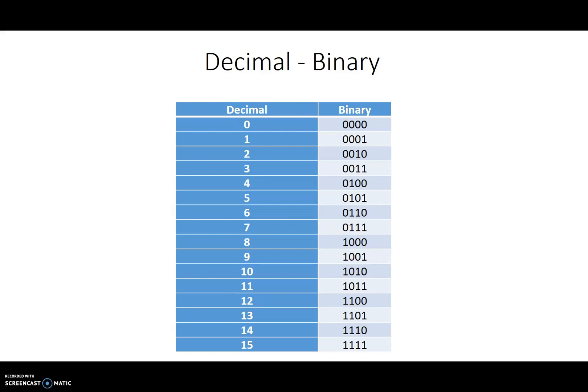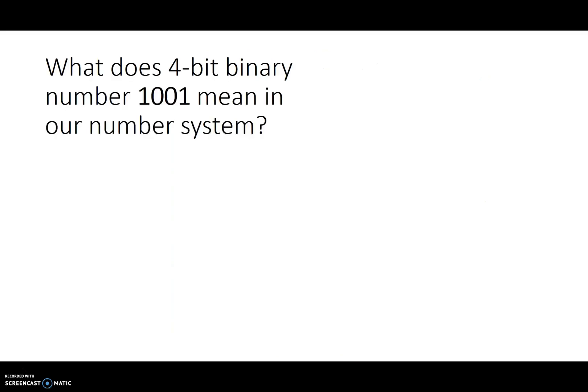Since there are 0 to 15, that's a total of 16 numbers. Since we have a total of 16 numbers, we need a total of 4 binary bits to represent them. So the binary bits count goes from 0000 — that's 4 bits — all the way to 1111. But how do we really know what a collection of binary bits really means in our number system?